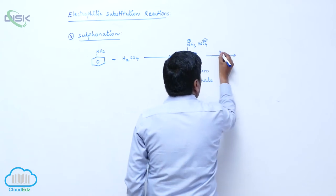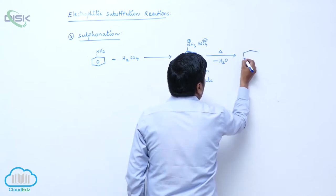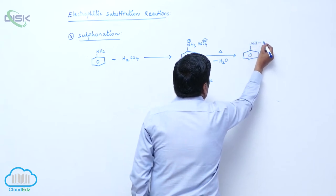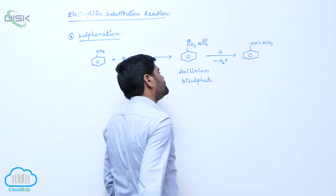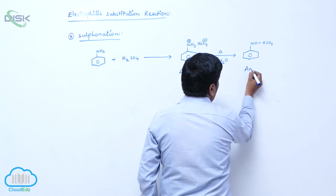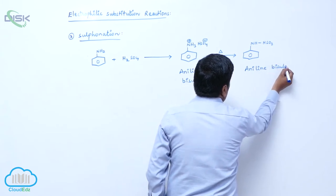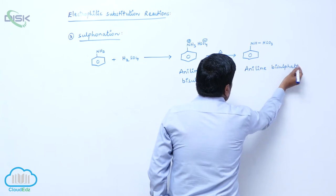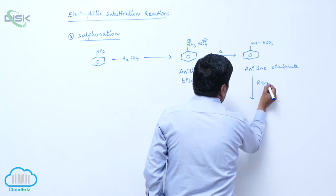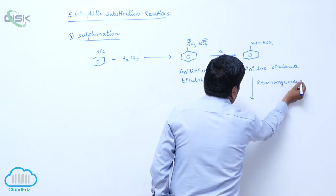On heating, loss of water molecule takes place to form aniline HSO3. Aniline bisulphate, this aniline bisulphate is involved in rearrangement reaction. When it is involved in rearrangement reaction,